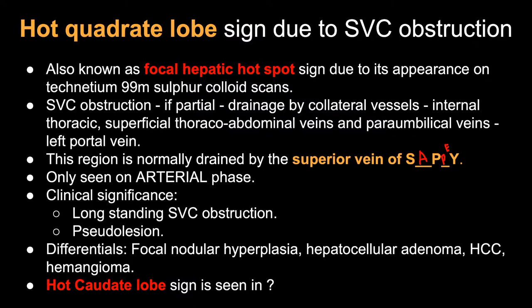Coming to the clinical significance: many times you may only have the abdominal scan — say you are reporting a CT abdomen — and you see this focal abnormality in the quadrate lobe. That should point towards suspicion of SVC obstruction, and then you can get a chest radiograph to begin with or a chest CT to rule out a cause of SVC obstruction. Another important clinical significance is that this is a hepatic pseudolesion — it may be confused for other arterially enhancing lesions such as focal nodular hyperplasia, hepatocellular adenoma, hepatocellular carcinoma, or a hemangioma. The key finding to distinguish this from other findings is the presence of collaterals, as we saw in our case.